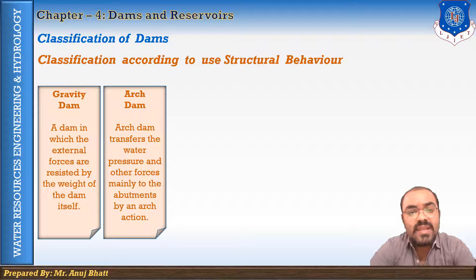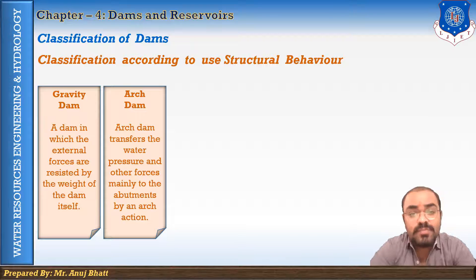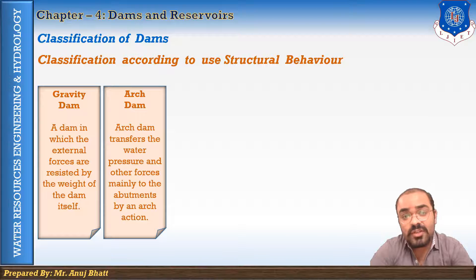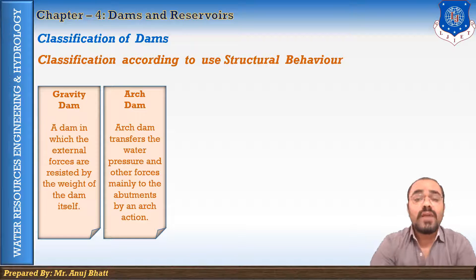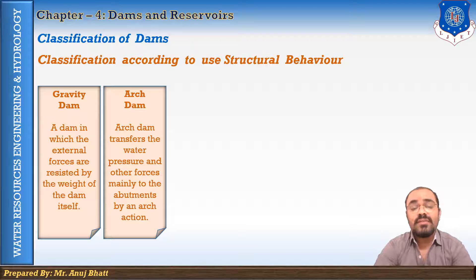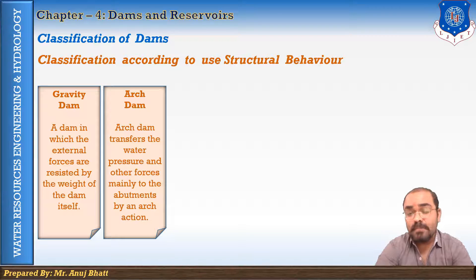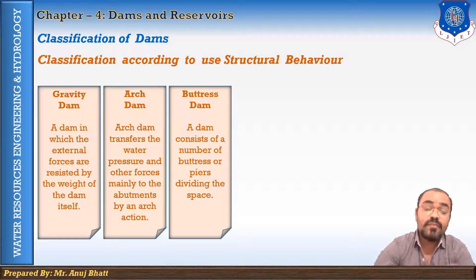An arch dam is curved in plan with its convexity towards the upstream side. An arch dam transfers water pressure and other forces to the abutments by arch action — that is the key feature of the arch dam. An arch dam is quite suitable for narrow canyons with strong banks capable of resisting the thrust produced by the arch action. The cross-section of an arch dam is approximately triangular like a gravity dam but comparatively thinner. An arch dam may have a single curvature or a double curvature in the vertical plane.